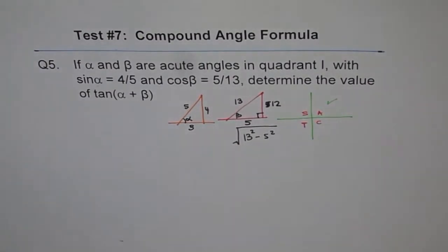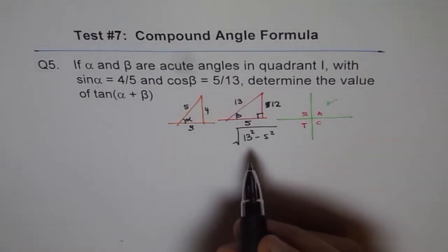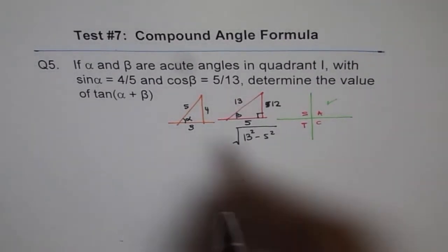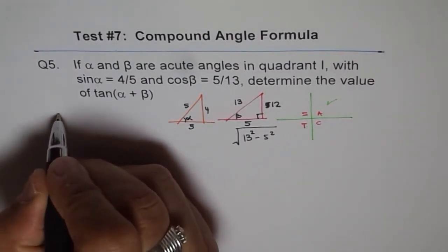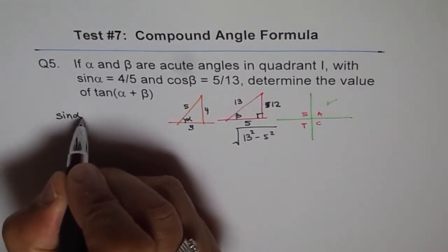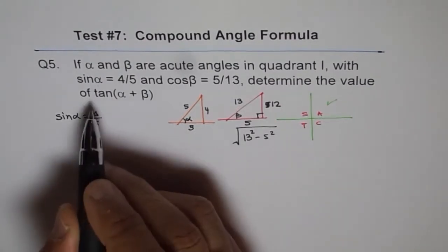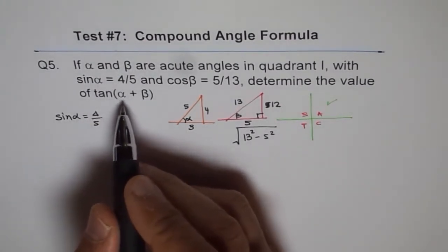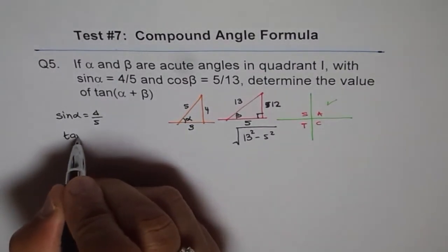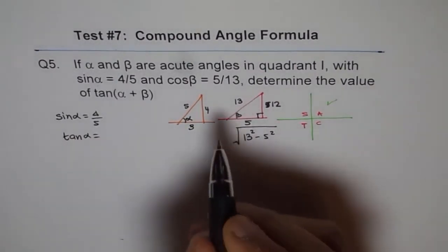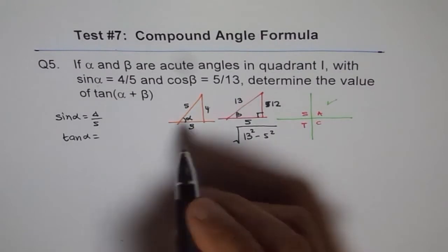Okay? So once you get all the sides, then just write down what each value is. Now, so you know sin α equals 4 over 5. And in tan(α + β), you basically need tan, right? So we get tan α is equals to how much? So tan α is 4 over 3, right?